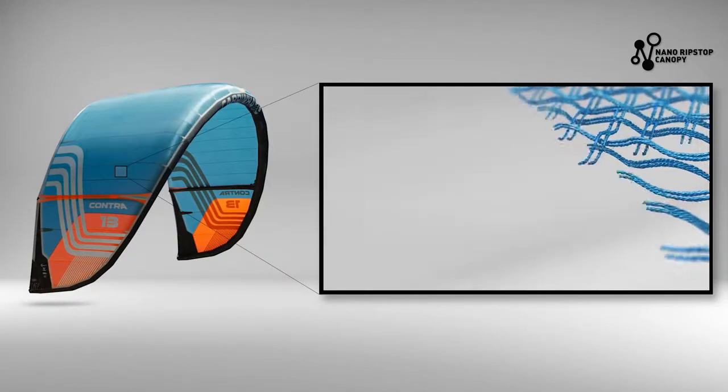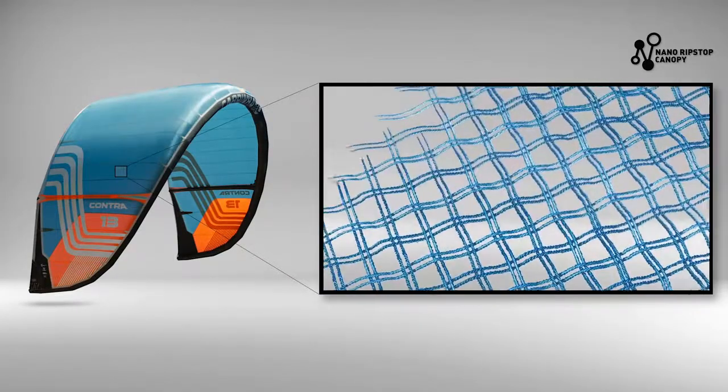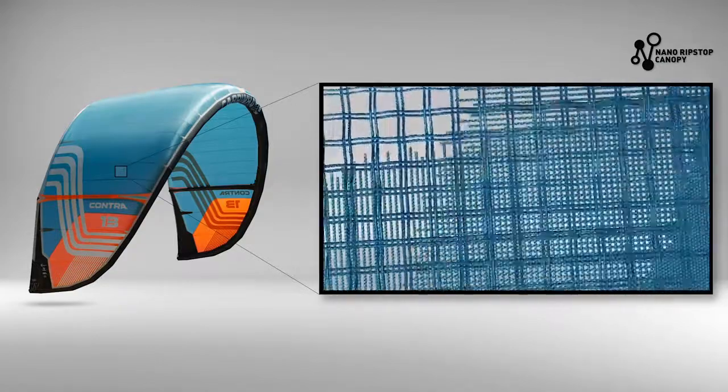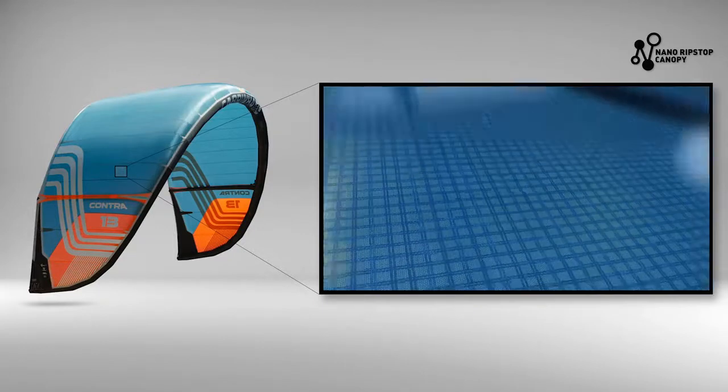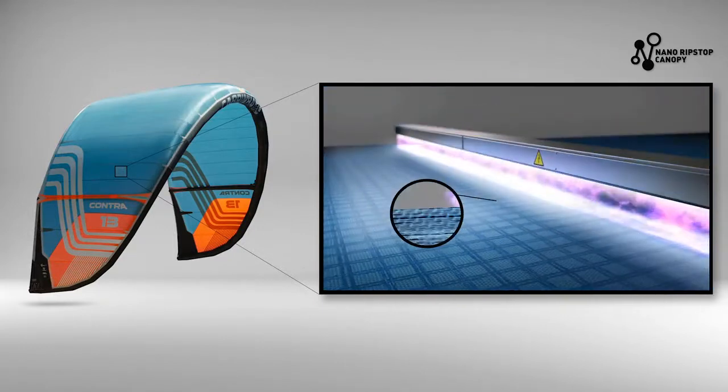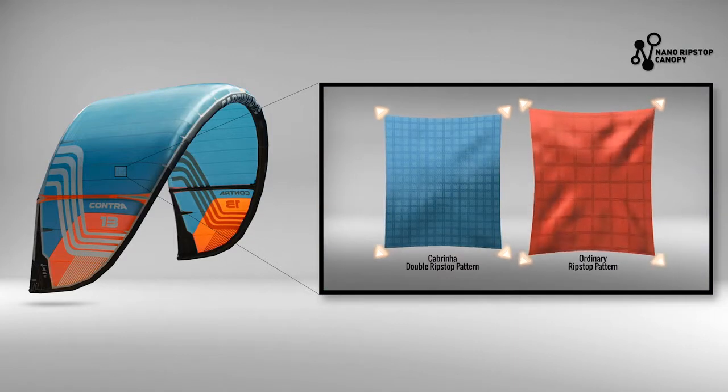New for 2020 on all kite models is Cabina's exclusive new Nano Ripstop kite canopy material. The new smaller ripstop pattern increases the amount of cells in every single panel, while the all-new coating is locked into place using a special plasma treatment.